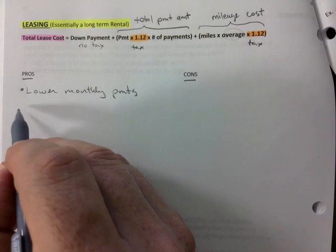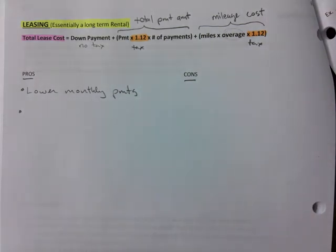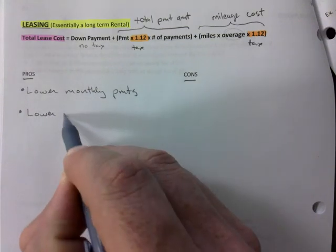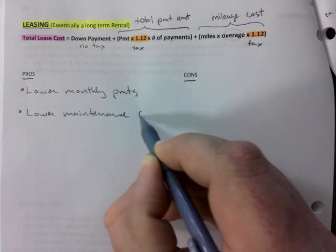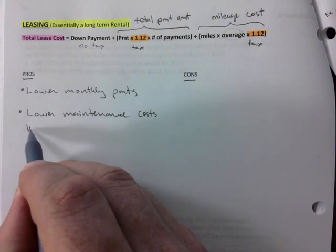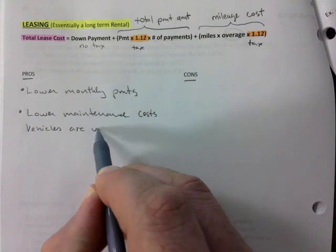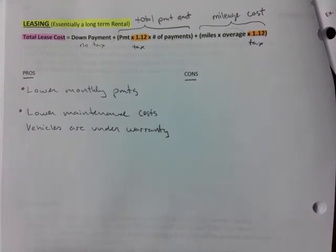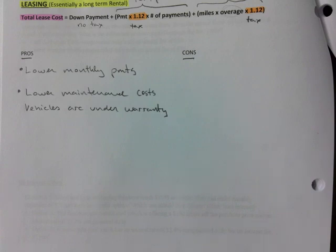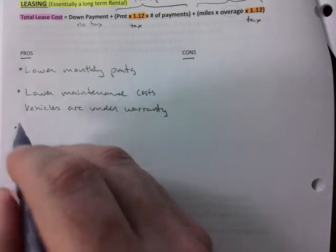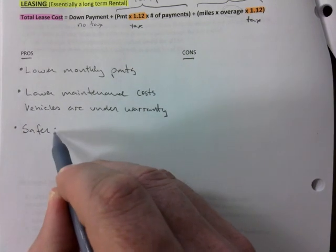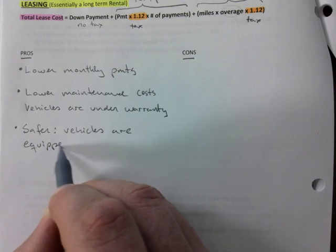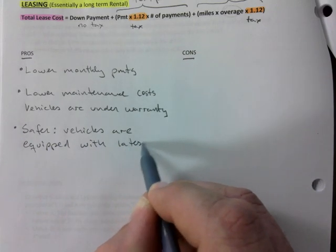Another pro would be lower maintenance costs. Why is that? Vehicles are under warranty. So meaning if you consistently lease, you are overall going to have a lower maintenance cost because you always have a new car. It's more reliable, it has warranty. And also, safer vehicles are equipped with latest safety features.